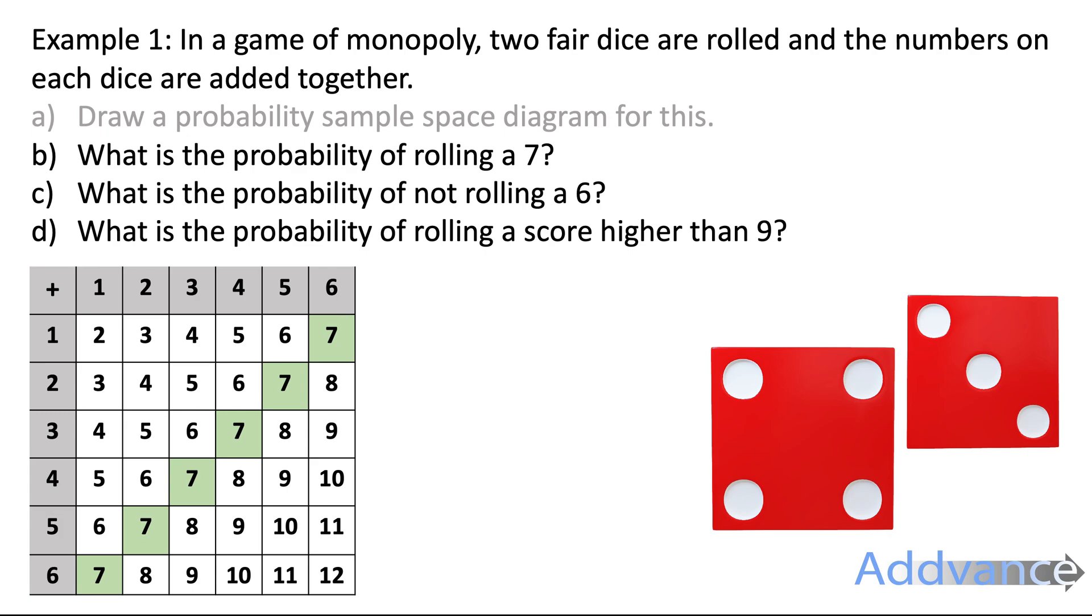There are six different ways of getting a 7 here, and those are highlighted in green. And so, there's 6 out of 36 possible outcomes.